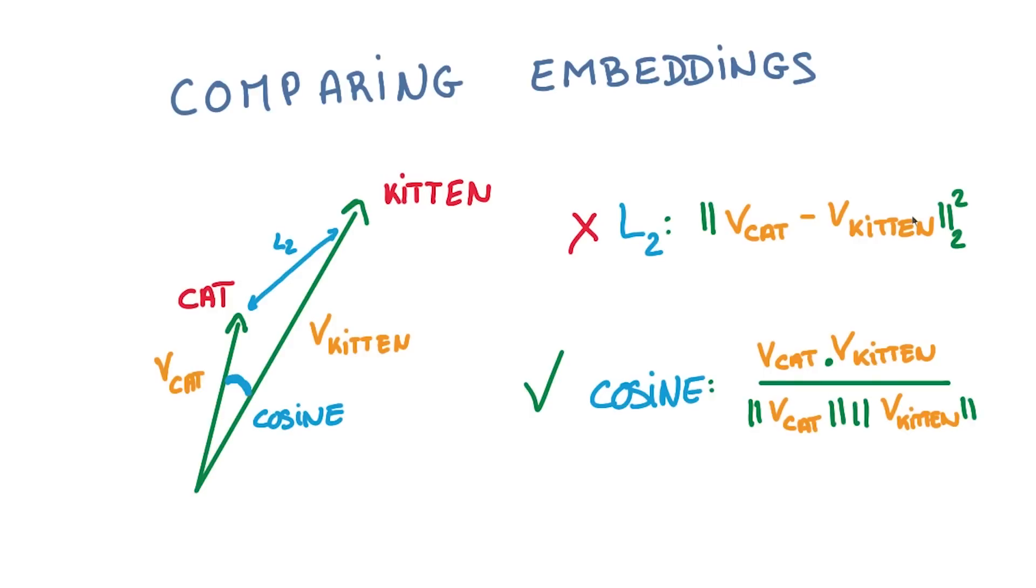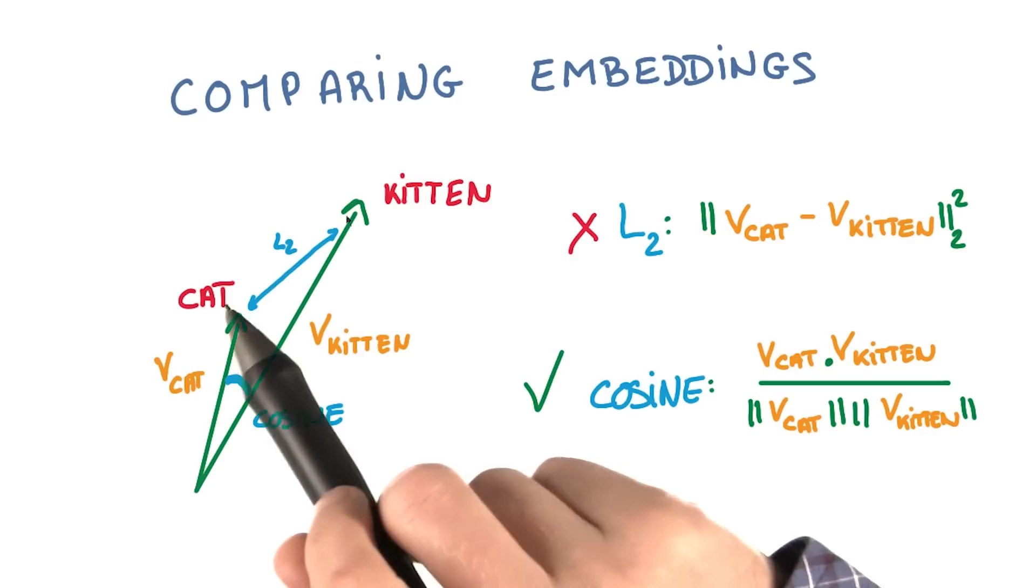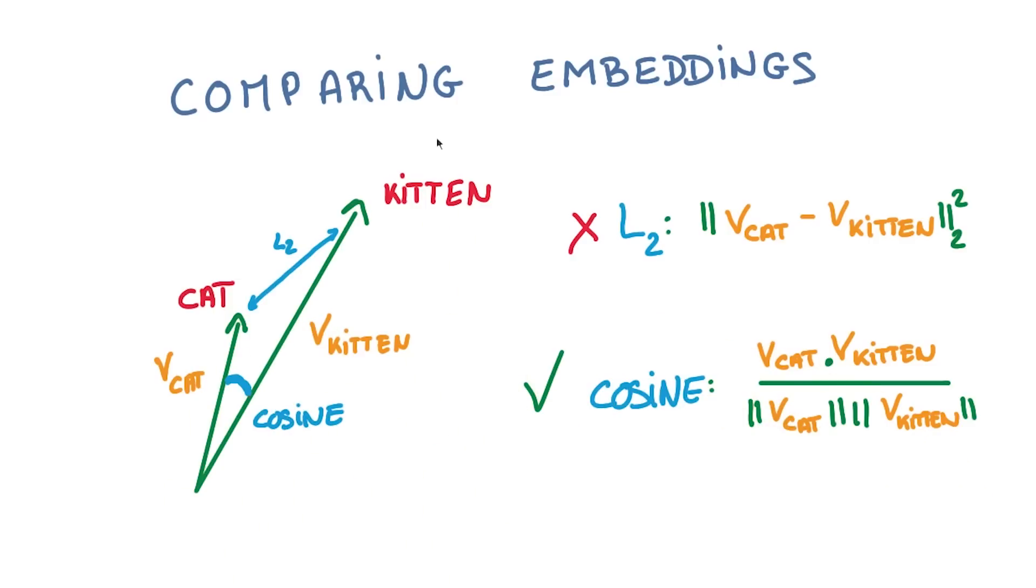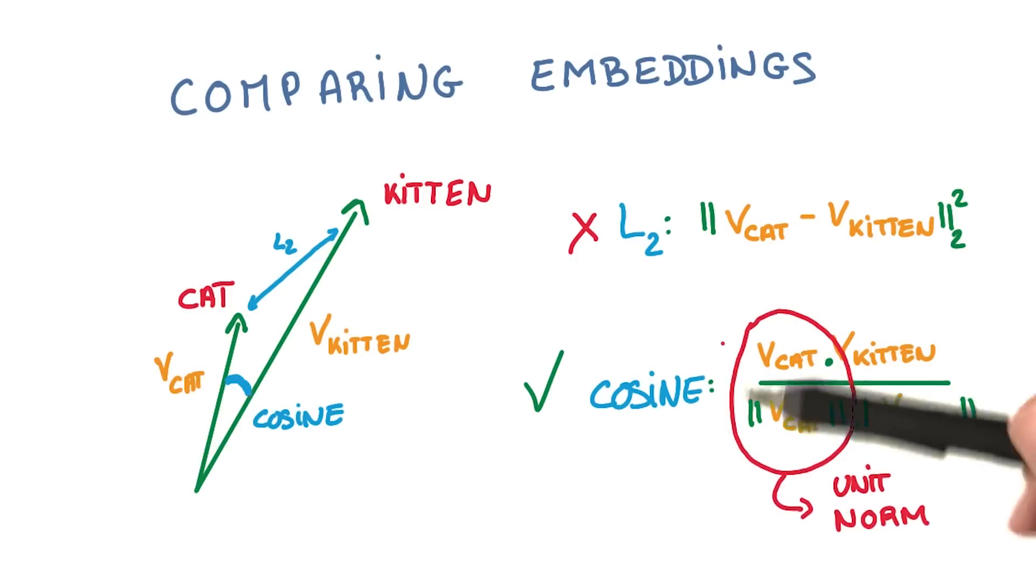Two more technical details about Word2Vec and about methods to learn embeddings in general. First, because of the way embeddings are trained, it's often better to measure the closeness using a cosine distance instead of L2, for example. That's because the length of the embedding vector is not relevant to the classification. In fact, it's often better to normalize all embedding vectors to simply have unit norm.